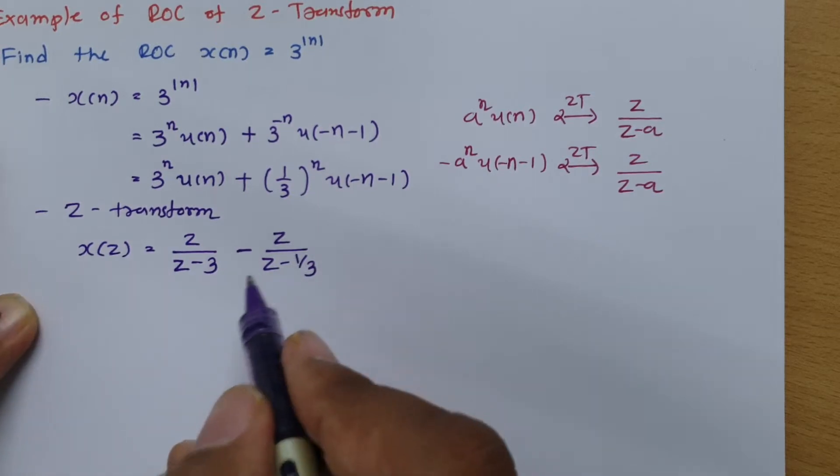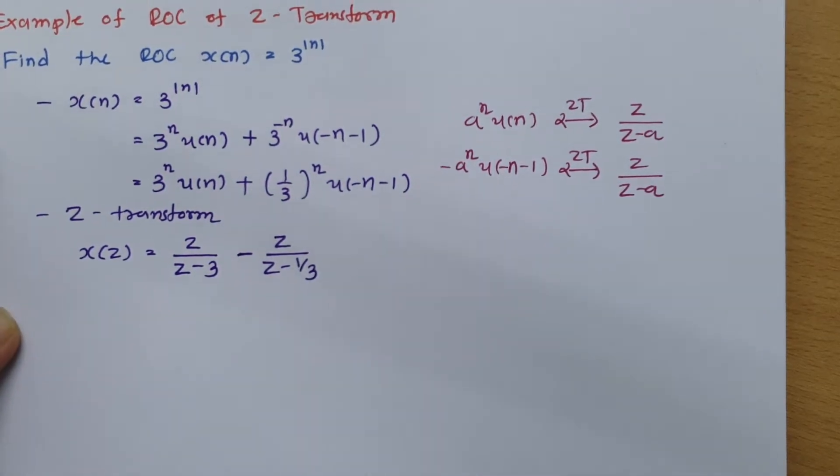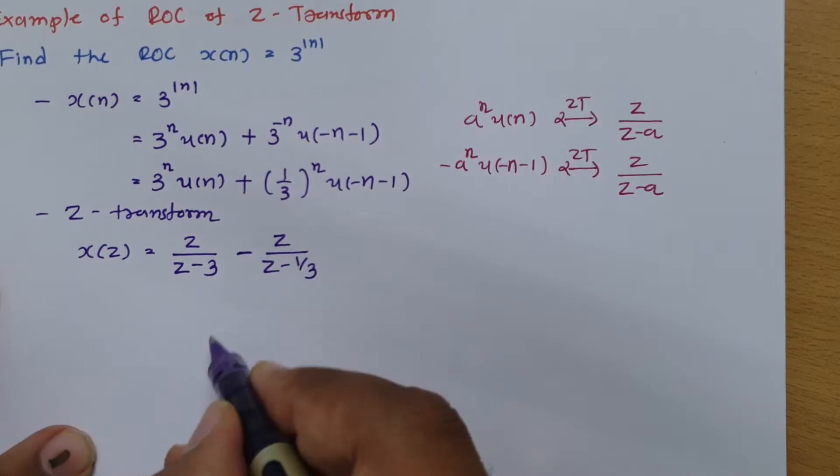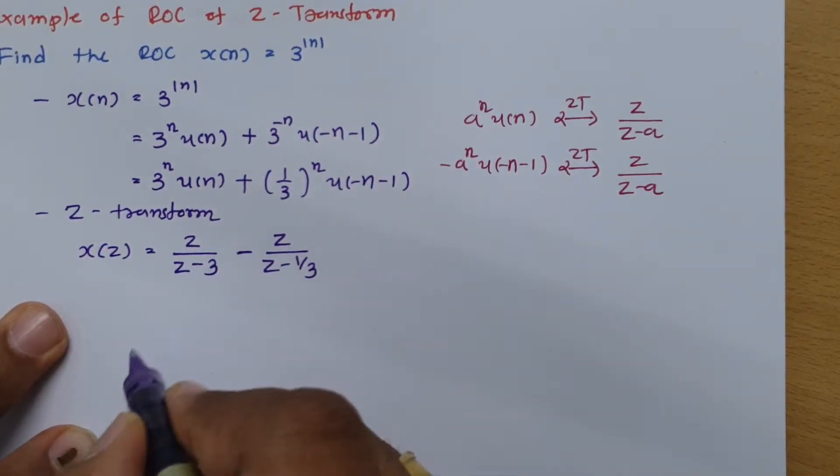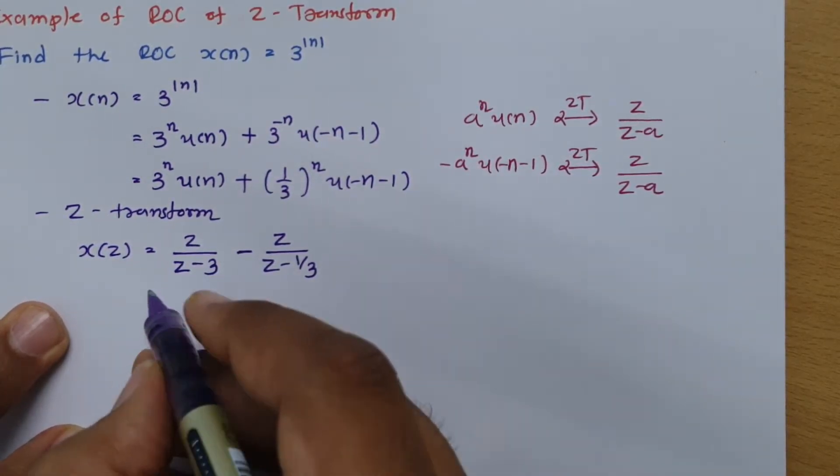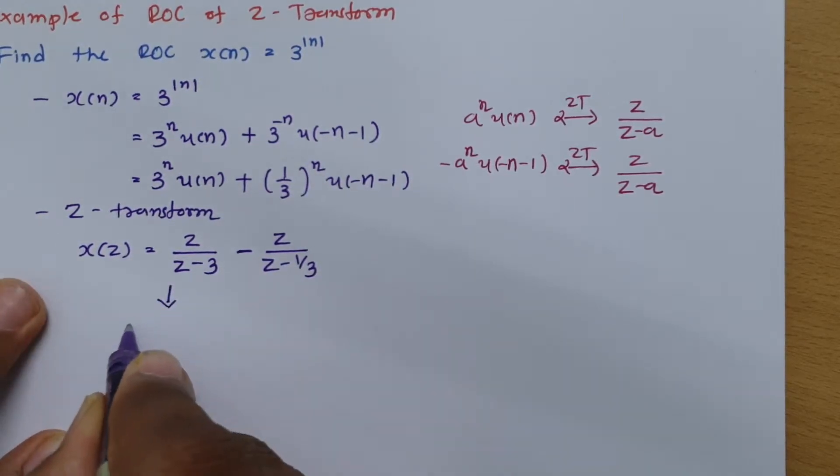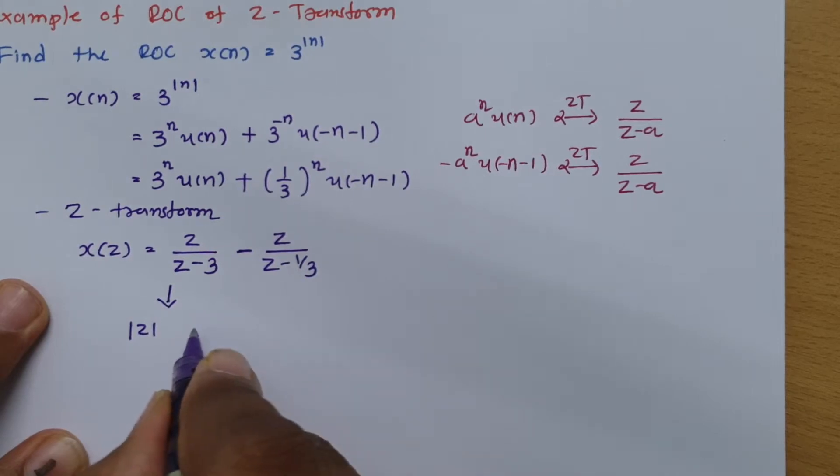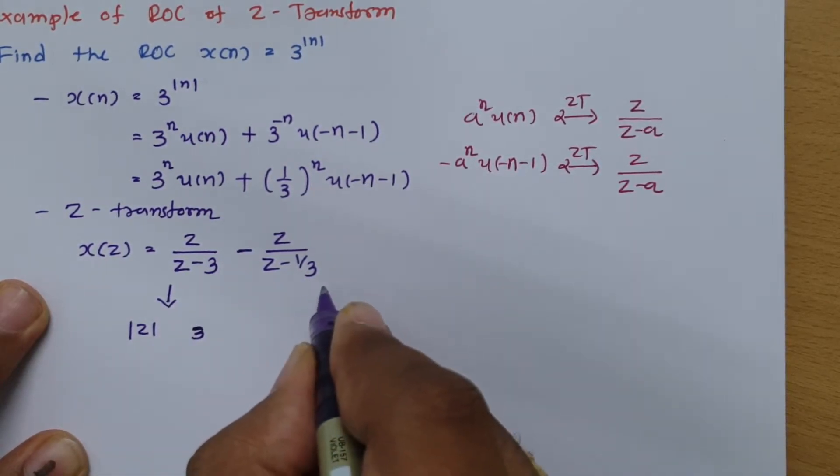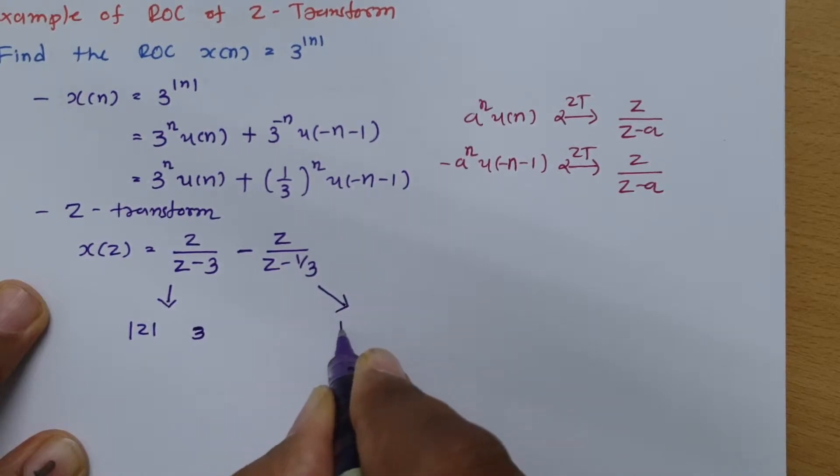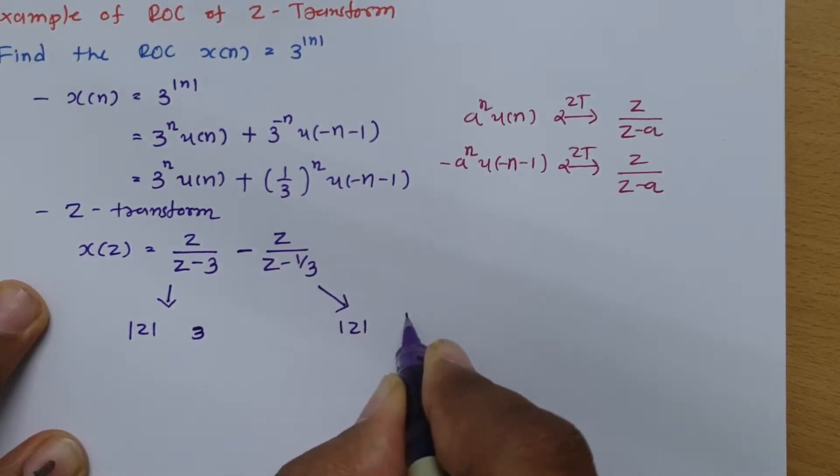So this is the Z-transform which we have right now. From this Z-transform we can identify the position of poles. So here the position of pole is happening at 3, and for this signal the position of pole is happening at 1/3.